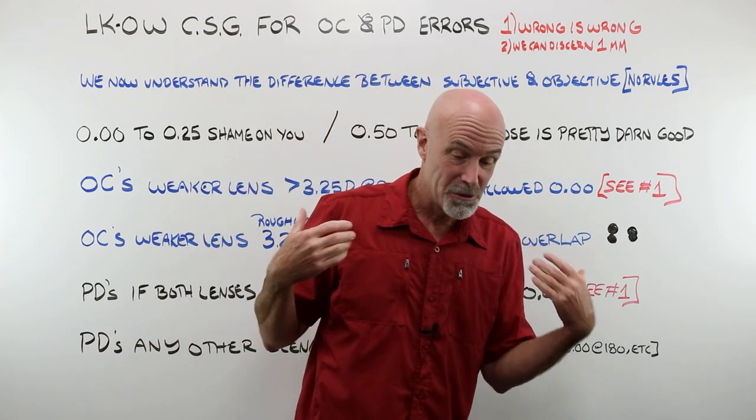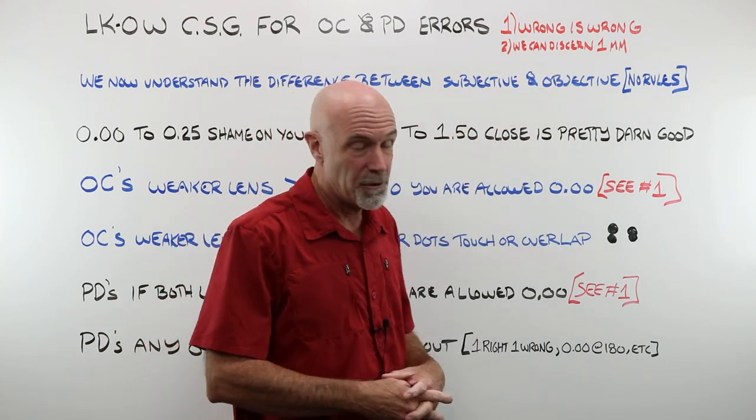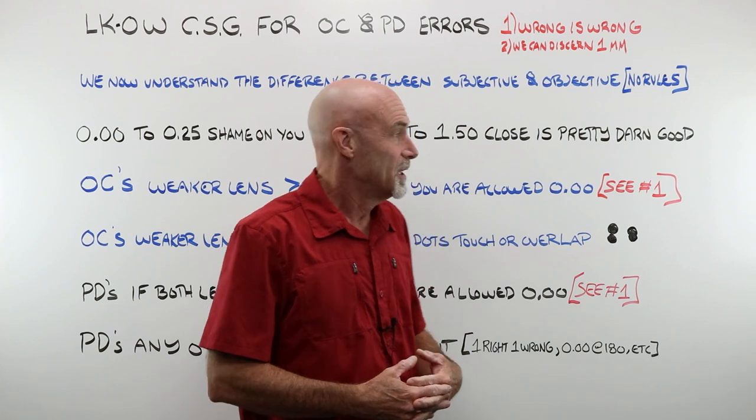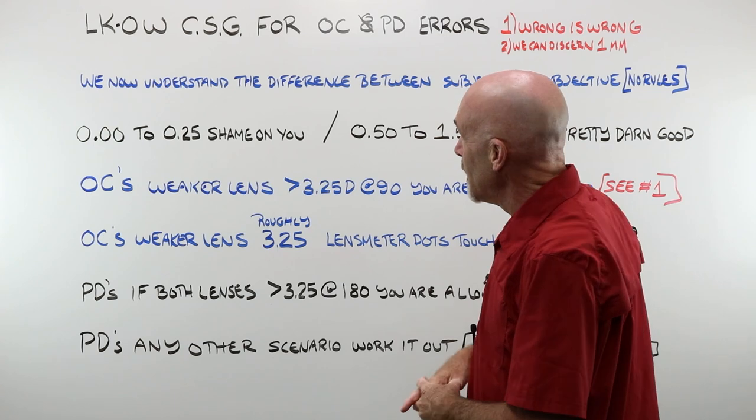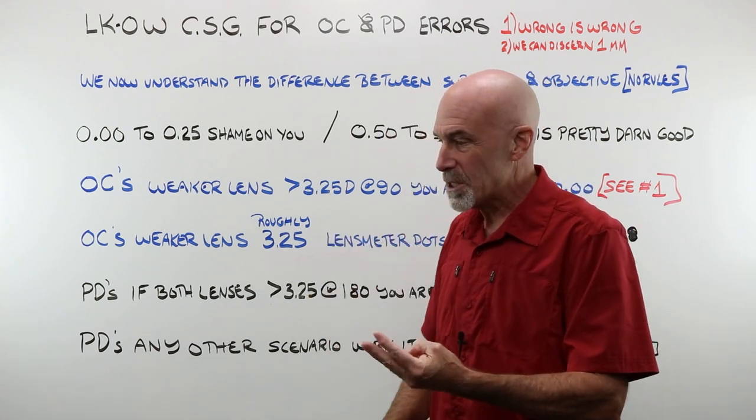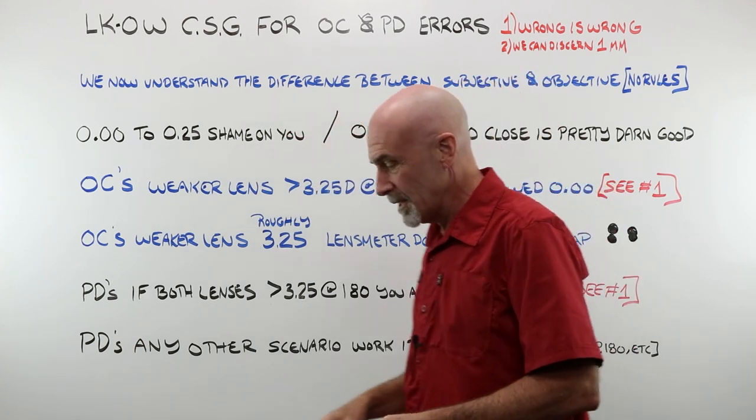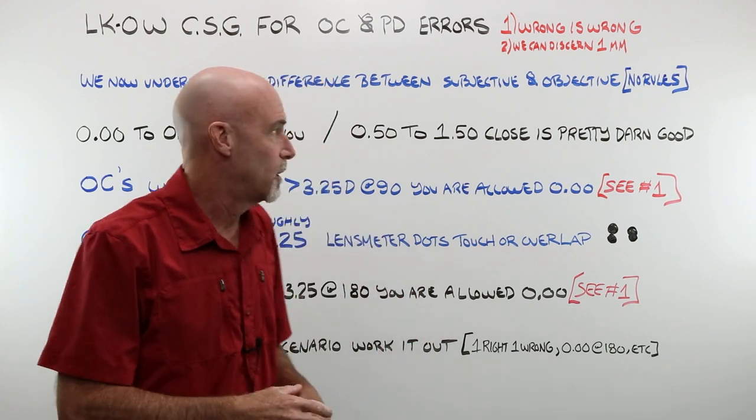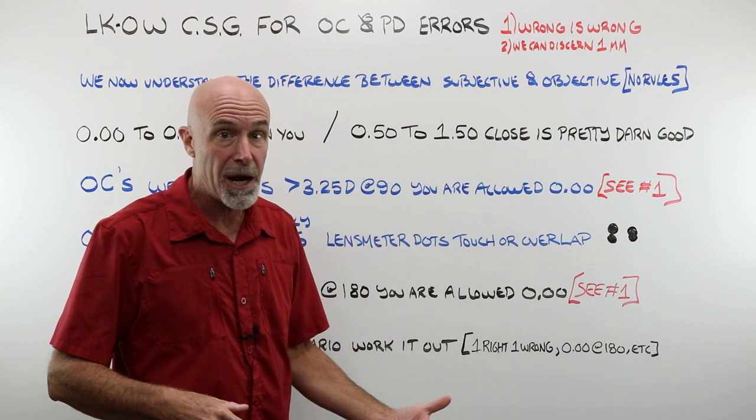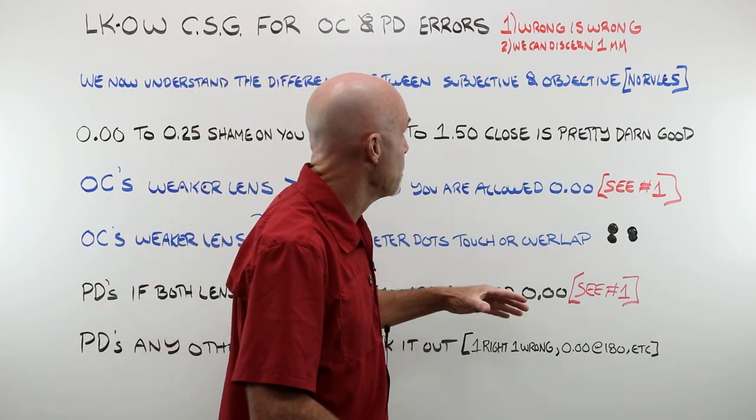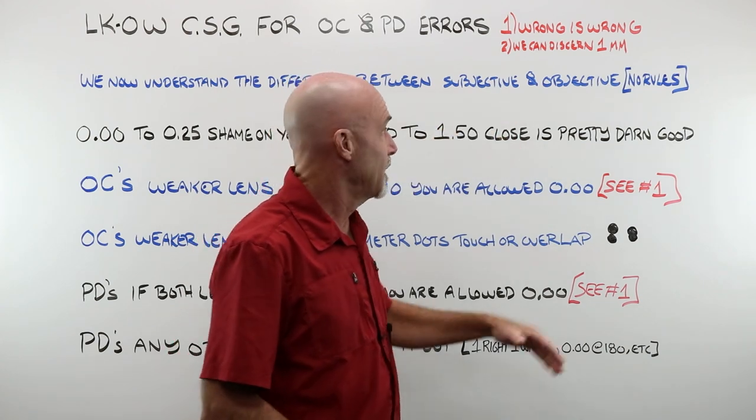Rule number two is it is my true honest belief that for most of us, we can accurately and repeatedly discern about one millimeter. Our PD sticks are one millimeter. Our layout charts are divided in one millimeter. Now, we've watched one. We've watched two. We've watched the beginning of this one. We now understand the difference between a subjective and an objective measure. We understand that everything connected to lenses, lens power, lab work, layout, okay, it's all open to human interpretation. Hence, there are no rules except that what you choose to make them.